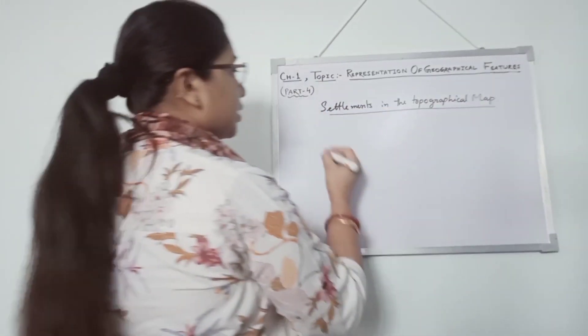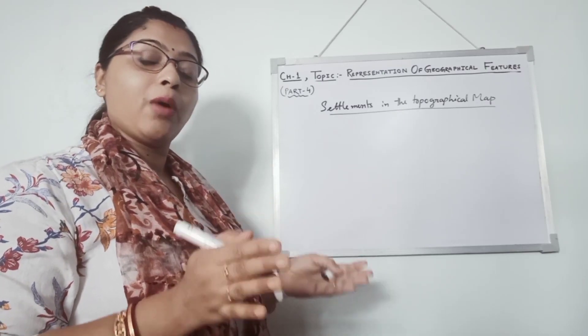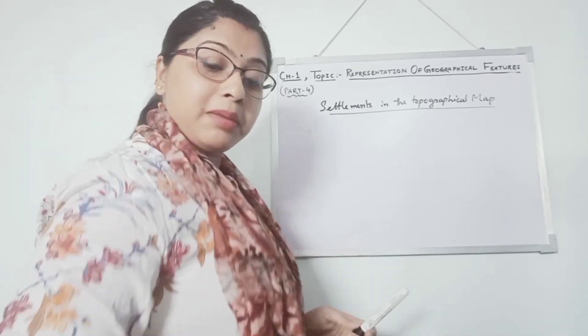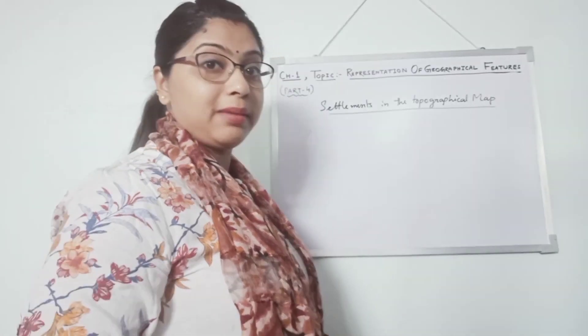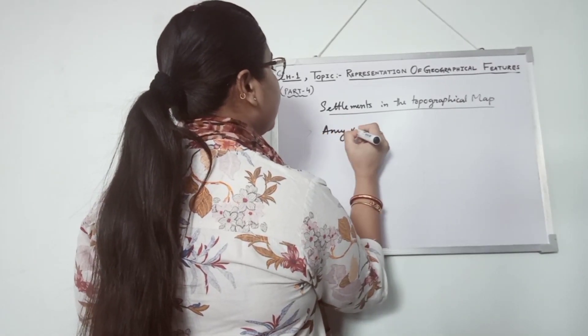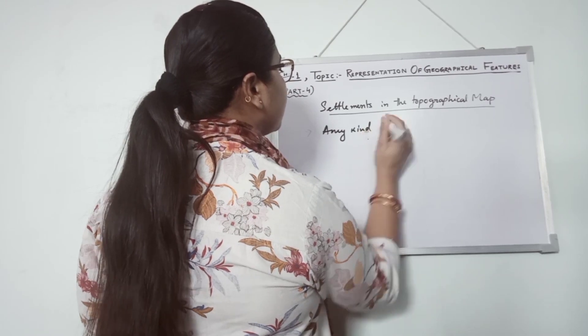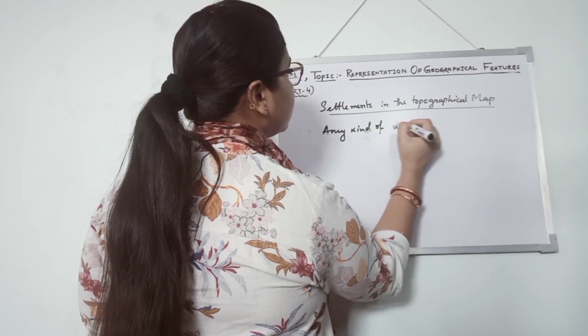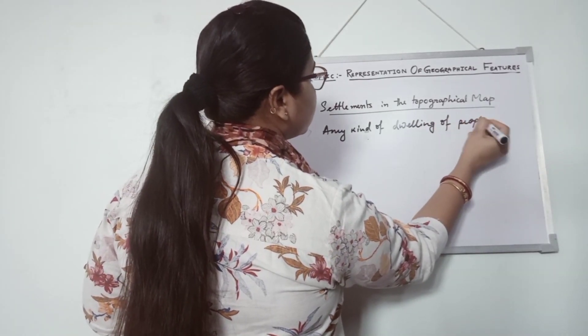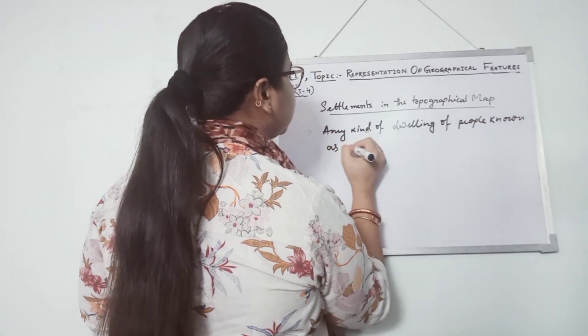So what is settlement? Settlement means dwelling place of people. It can be any kind of dwelling place. Any kind of dwelling of people is known as settlements.